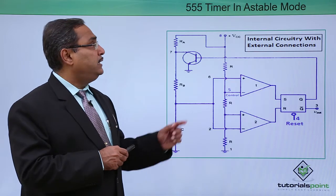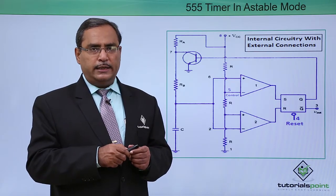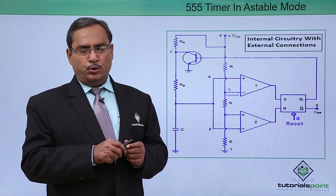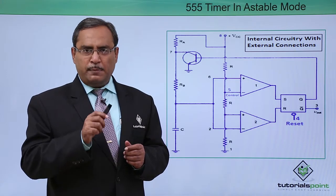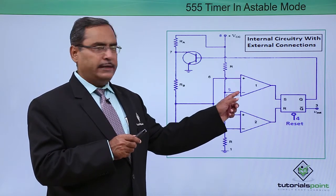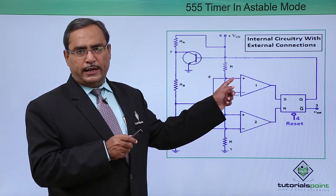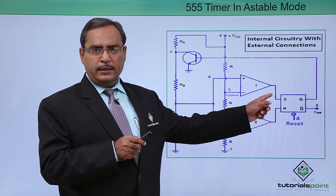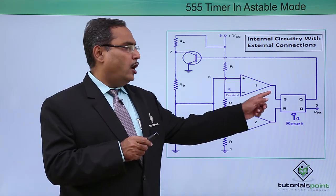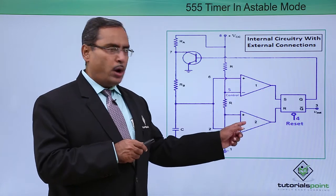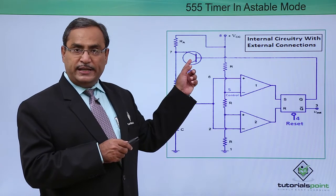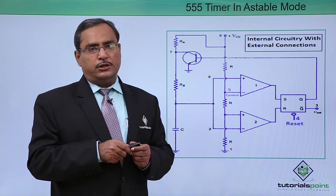Here is the 555 timer in astable multivibrator mode. The 555 timer is an 8-pin DIP IC having mainly four components: two comparators with plus and minus terminals — when the positive terminal voltage is greater than the negative terminal voltage the output is high, otherwise the output is low — one SR latch, one discharging transistor, and a relaxation oscillator.